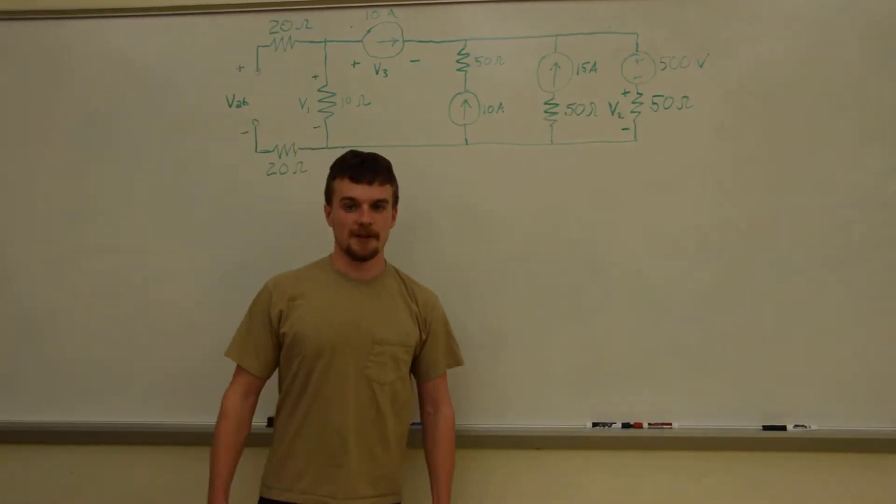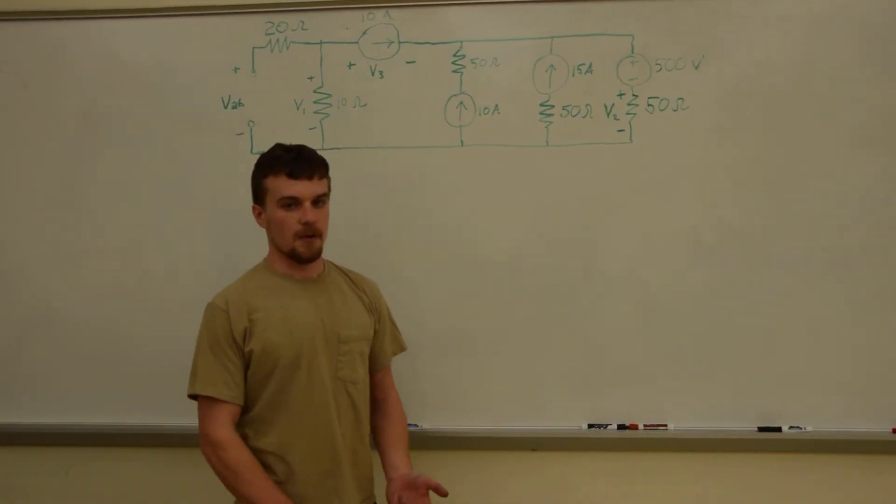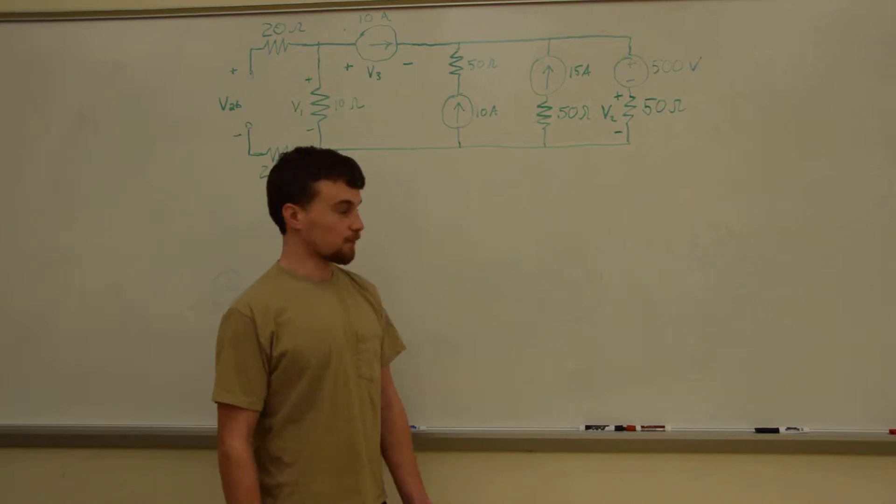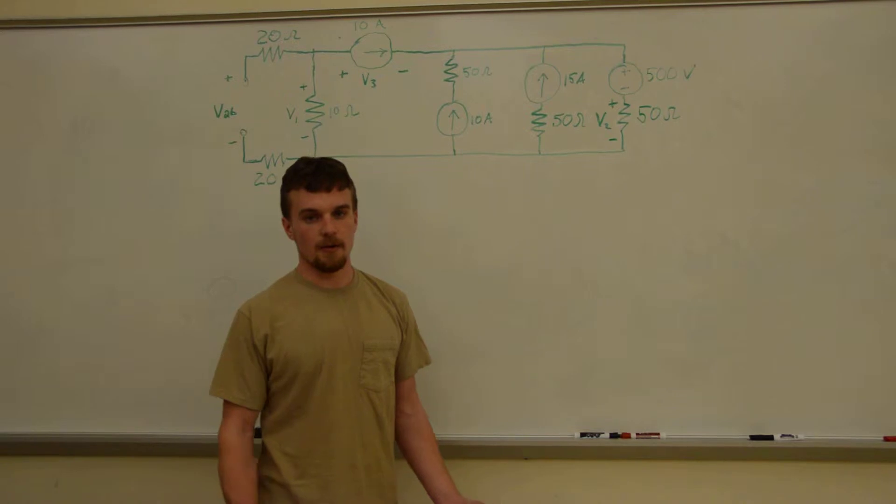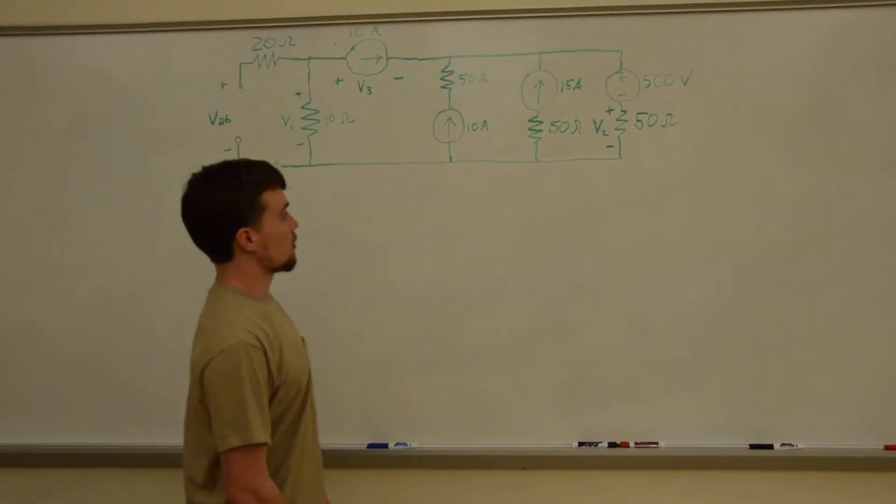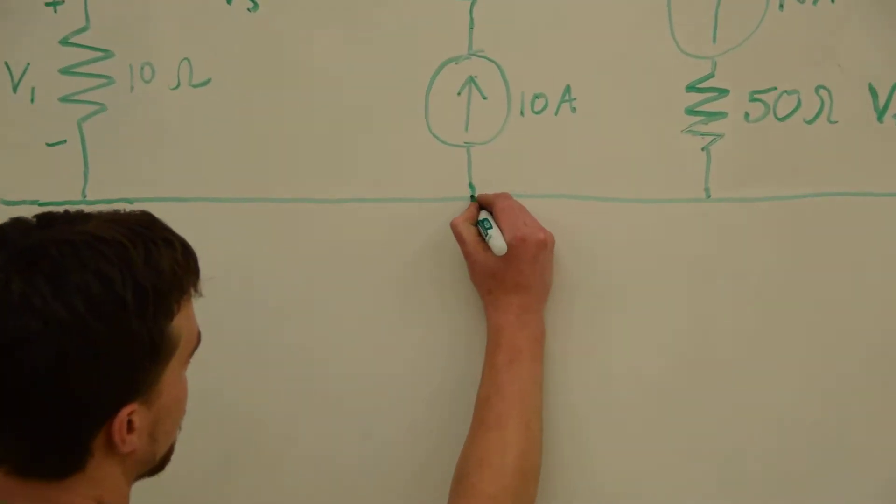Now the first thing we want to do is assign a ground node, or zero volts, and the best way to go about this is to take the most complicated node to be zero volts, which looks like probably this node right here. So this will be our ground.